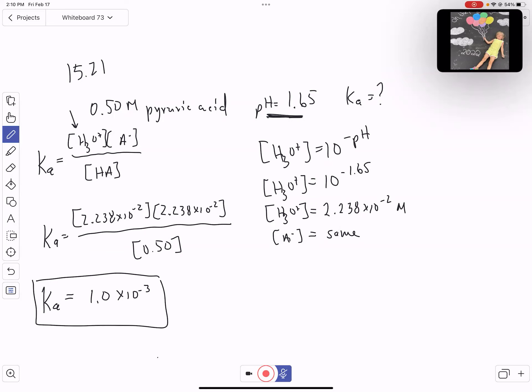Definitely see a question like this on the exam. I'll give you concentration and pH. From pH, you can get hydronium. When you find hydronium, that's also the concentration of the conjugate base because they're formed in the same ratio. Now you have everything needed to find the Ka for that acid.